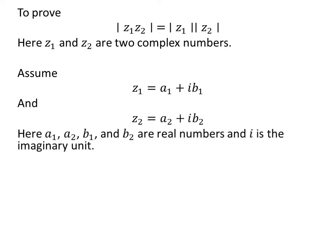To prove the above identity, let us assume z1 is equal to a1 plus i times b1, and z2 is equal to a2 plus i times b2. Here, a1, a2, b1 and b2 are real numbers and i is the imaginary unit.